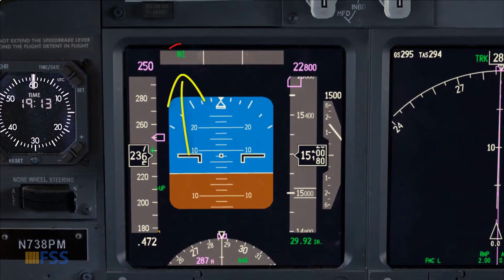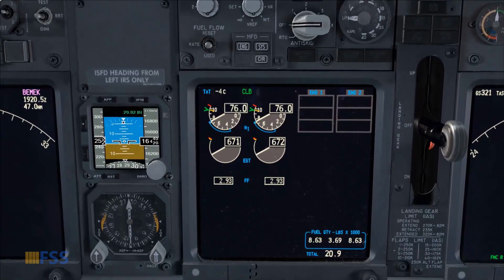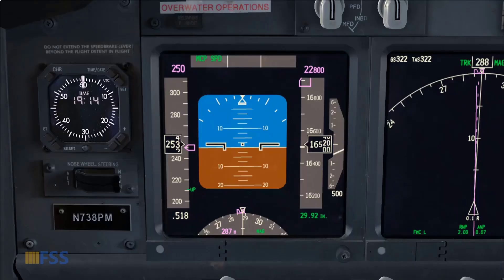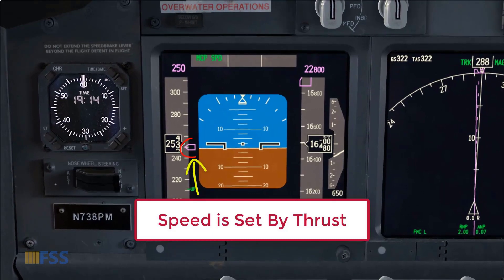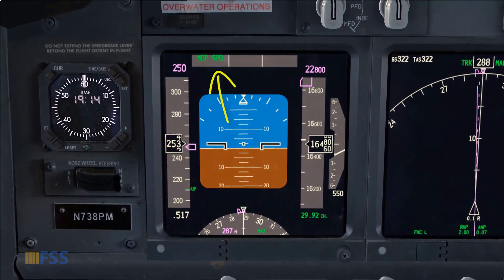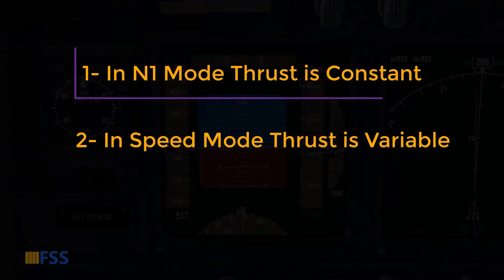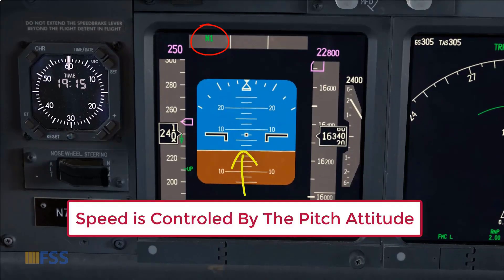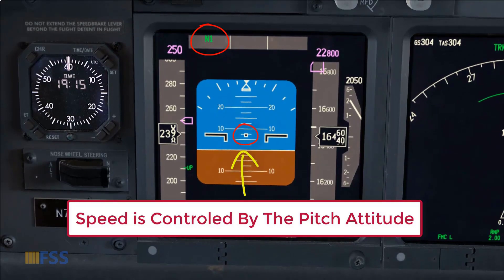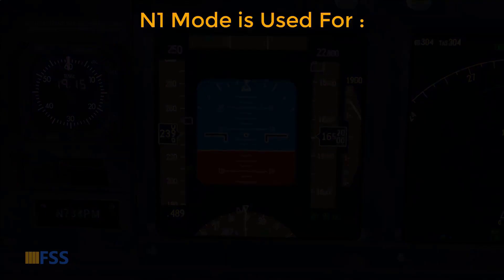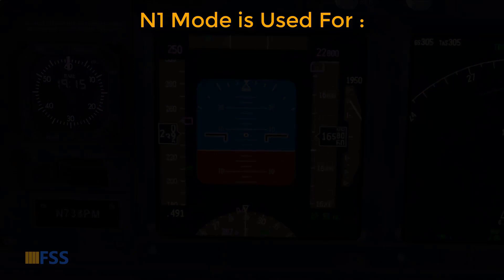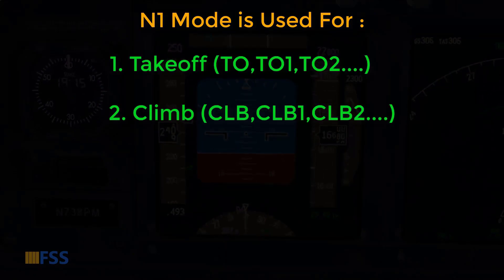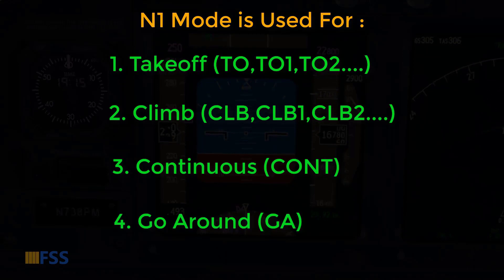This mode is called N1 mode. In the second mode, it can adjust the thrust continuously in order to chase the speed target — this mode is called Speed mode. So in N1 mode thrust is constant, unlike Speed mode where thrust is variable. In N1 mode, speed can be controlled only by pitch attitude. N1 mode is used for high thrust settings during takeoff, climb, continuous, and go-around.